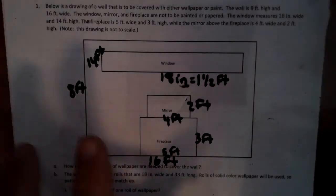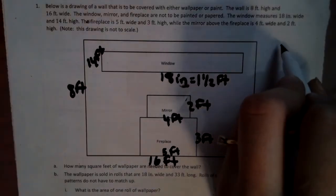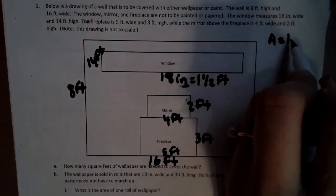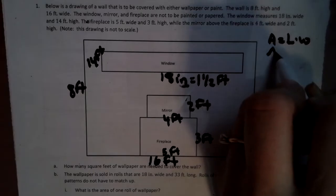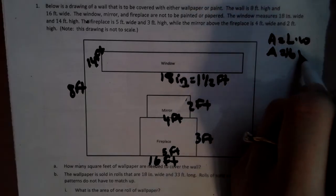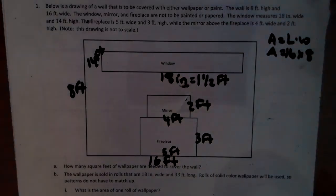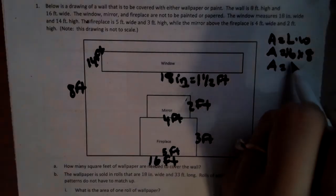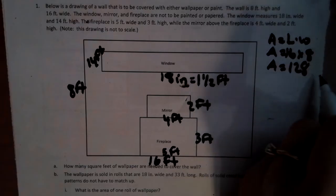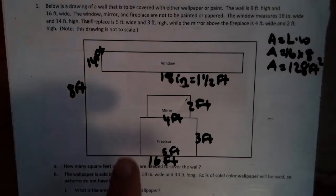So we got to find the area. Area equals length times width. Area equals 16 times 8. That's our first piece. So we got to do our 16 times our 8, which area equals 128. Now these are feet squared, feet to the two.